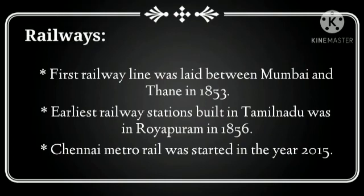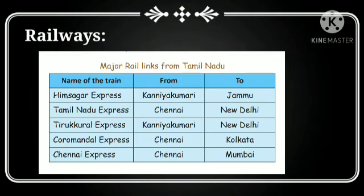In the topic railways, we are learning that the first railway line was laid between Mumbai and Thane in 1853. The earliest railway station built in Tamil Nadu was in Rayapuram in 1856. Chennai Metro Railway was started in the year 2015. Major railway links from Tamil Nadu include: Himasagari Express from Kanyakumari to Jammu, Tamil Nadu Express from Chennai to New Delhi, Thirukural Express from Kanyakumari to New Delhi, Coromandal Express from Chennai to Kolkata, and Chennai Express from Chennai to Mumbai.